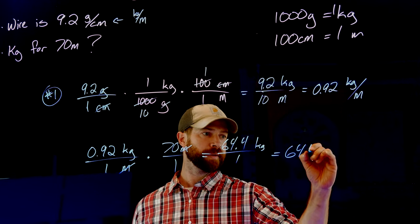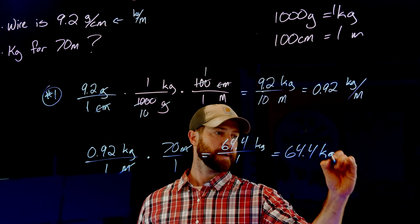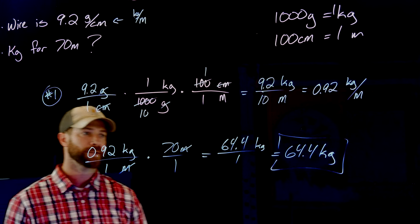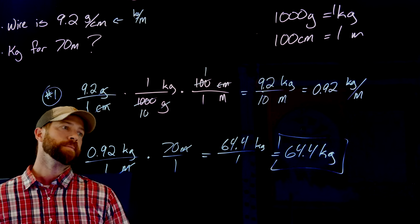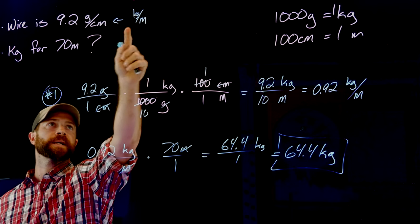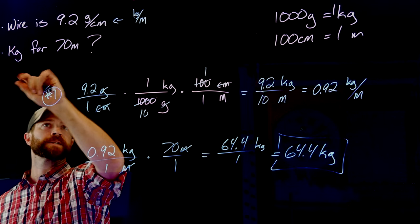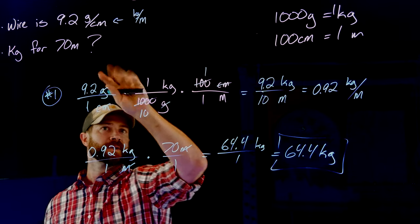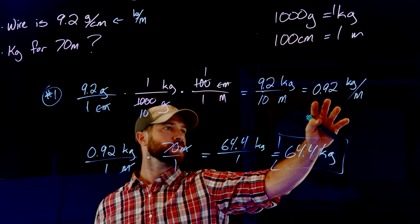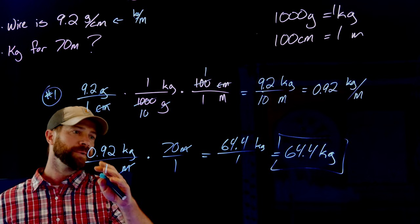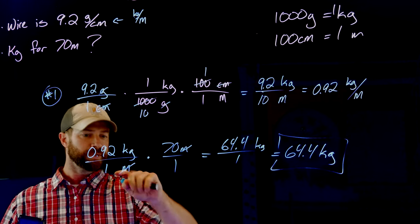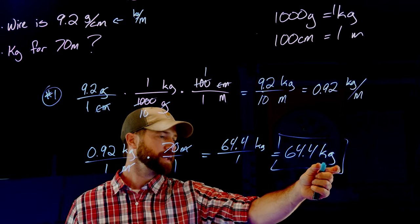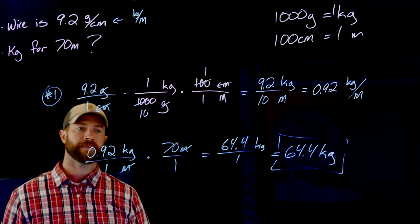So just a real quick refresh on what we did right there. We had grams per centimeter, but we wanted to translate that into kilograms per meter because that was the information being requested and given. We do that with those rates. We're not going to deal with the 70 meters at all in this first one until we get to our new rate. Then we take our rate and multiply it by the 70 meters. And you can always double check. The meters do cancel, leaving us just with kilograms, meaning that our final information is in the units of kilograms. And in this case, it would be 64.4.